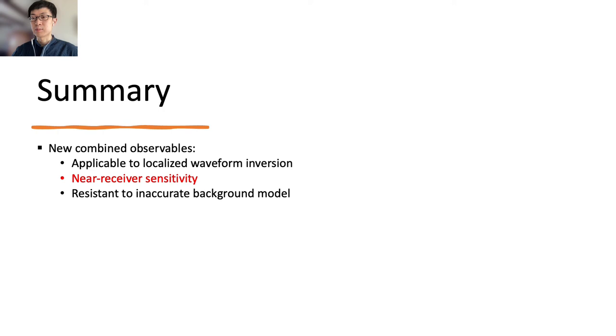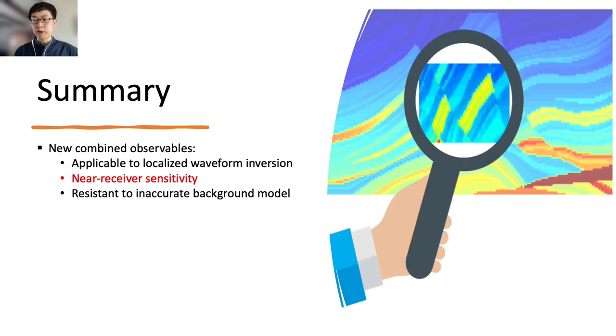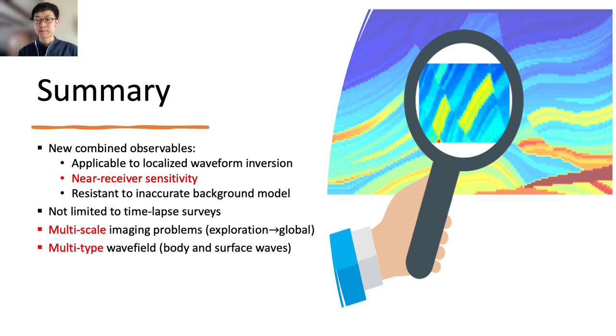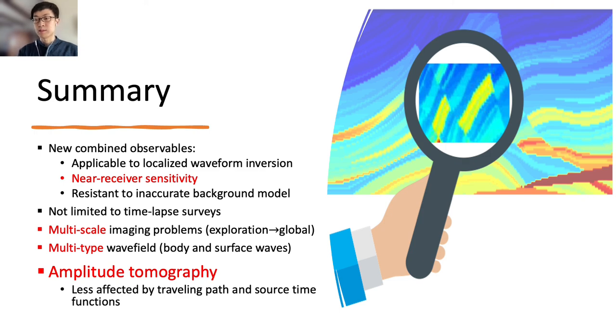In summary, this study has shown the possibilities of applying some new observables such as apparent P and S-wave velocities to localized waveform inversion. The near-receiver sensitivities of the amplitude ratio-based observables has made model-driven local simulation approaches more robust and resistant to background model errors. It is as if we are viewing local areas with a magnifier and neglecting what happens outside. In fact, this concept is not limited to time-lapse surveys in exploration seismology. It also applies to large-scale structural inversion with multi-type waveforms. The combined observable used in this study enables seismic tomography without travel times. Due to this effect, the influence of traveling paths and inaccurate source time function or positions can be mostly mitigated.